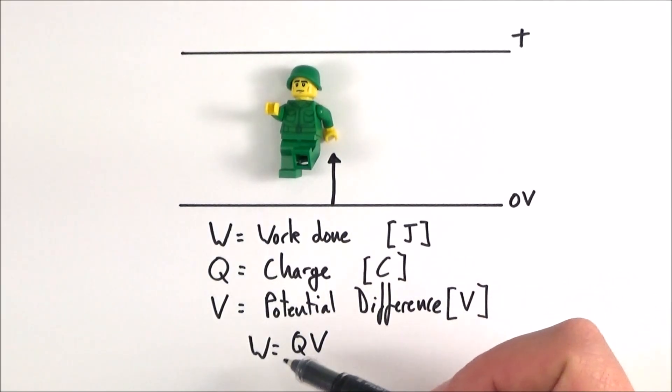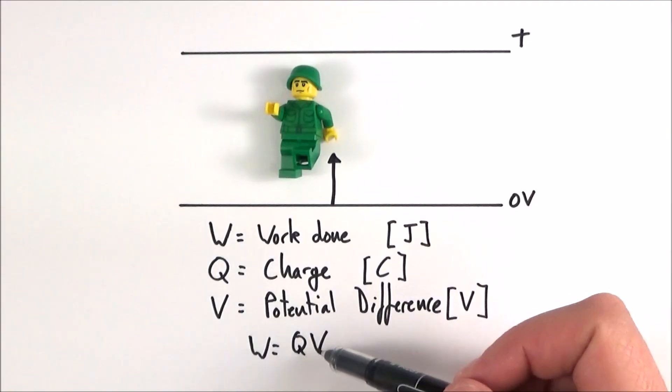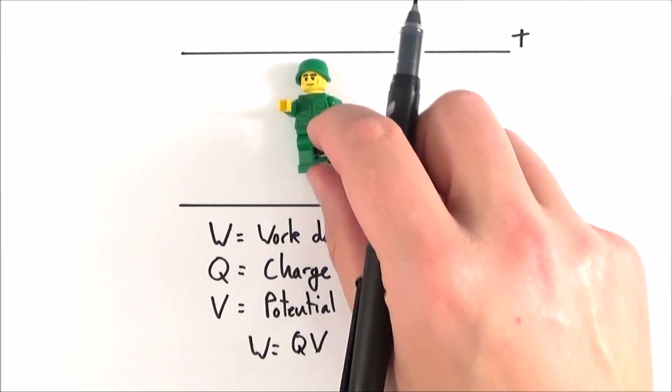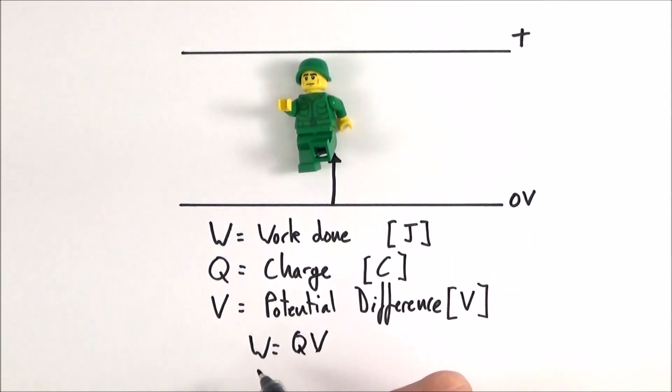Now it follows from this that the greater the charge or the greater the potential difference I need to move it through, the greater the amount of energy that I need to put into this to actually move it up there and therefore it follows that the work done is equal to the charge times the potential difference.